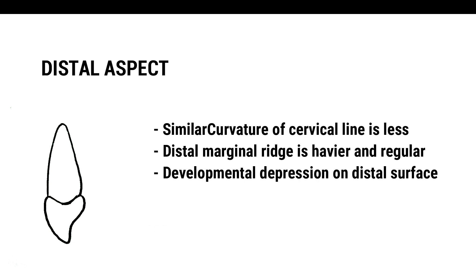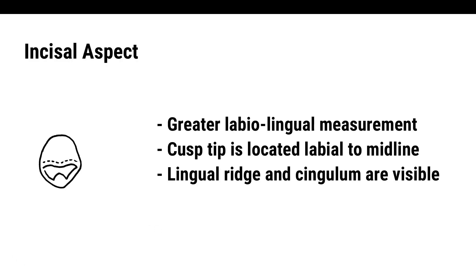Incisal Aspect: From the incisal aspect, a greater labiolingual measurement than mesiodistal can be well observed. The mesial half of the tooth appears more convex and bulkier labiolingually than the distal half. The cusp tip is located labial to the midline in a labiolingual direction and mesial in a mesiodistal direction. The lingual outline forms a shorter arc than the labial outline because of lingual taper. The lingual surface presents a prominent cingulum at the center, with marginal ridges, lingual ridge, and lingual fossae.